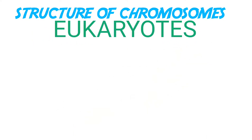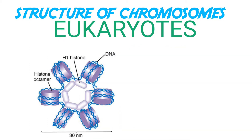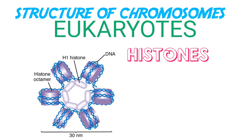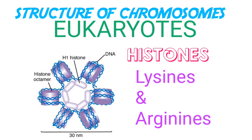In eukaryotes, this organization is much more complex. Here the DNA molecules are tightly wound around proteins called histones, which provide structural support and play a role in controlling the activities of the genes. So what are histones?